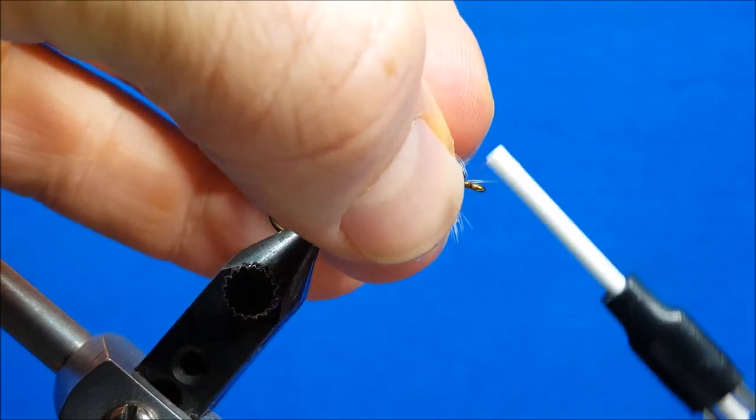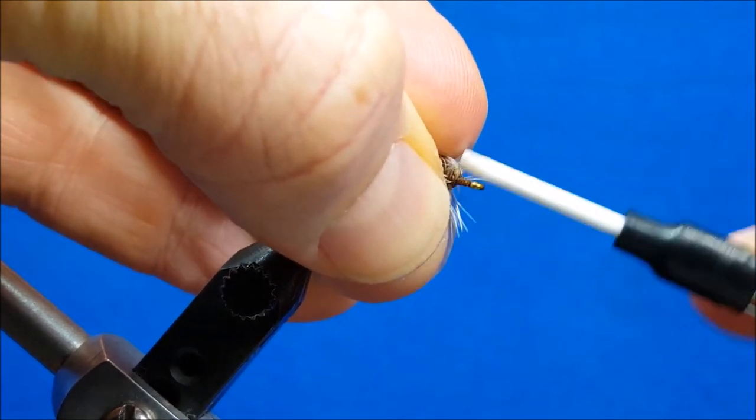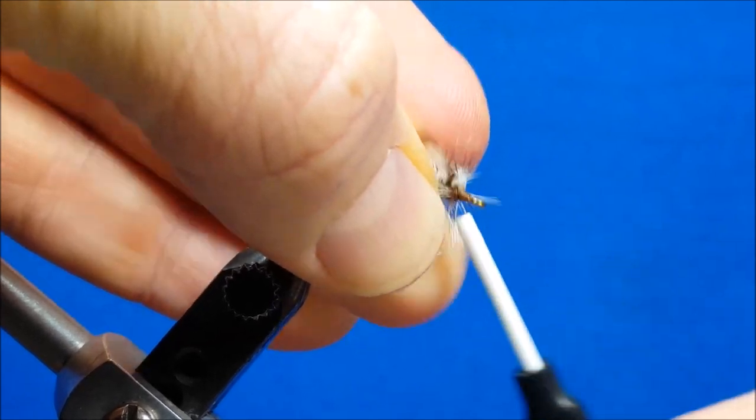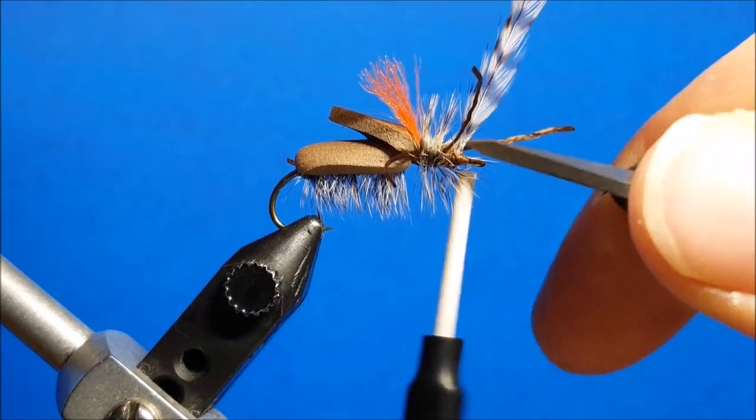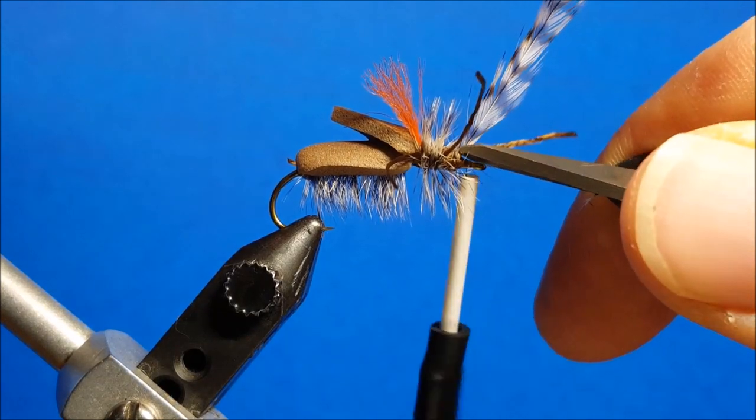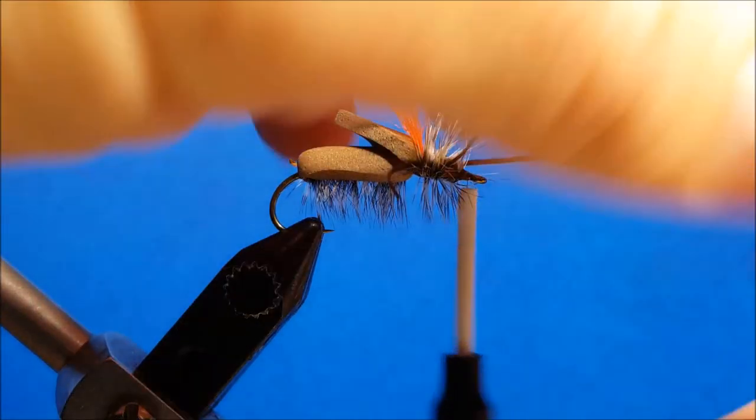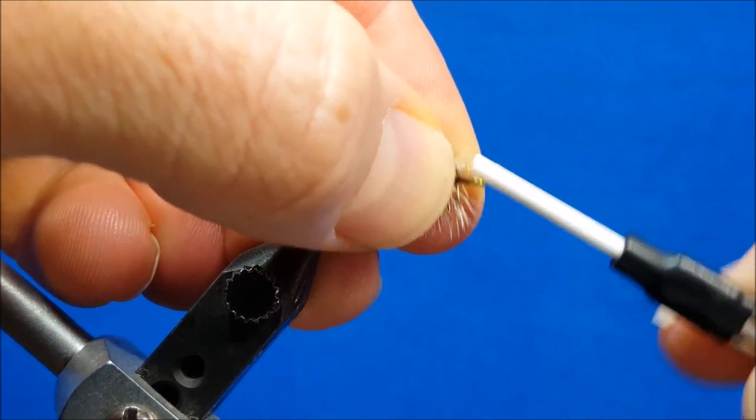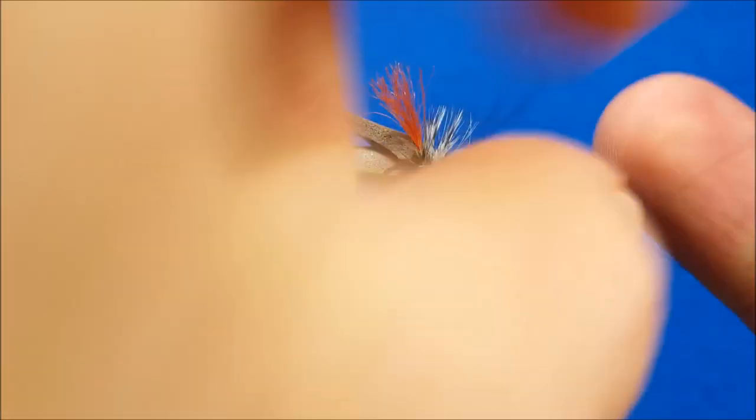With my fingers here, I'm going to pull those fibers back. Stick the nose of my bobbin right in there. I'm just going to wrap right back over the top of it and throw it down. Once again, this is a gnarly, nasty terrestrial. I'm not worried about stray fibers here and there. I'm just worried about giving it that buggy look and a little bit of extra flotation. I've got that taken care of. Pull back those fibers, throw down a couple more wraps.